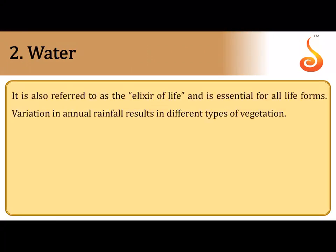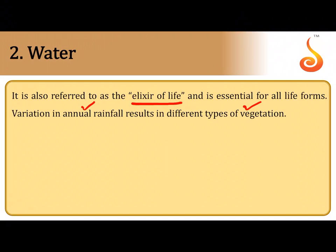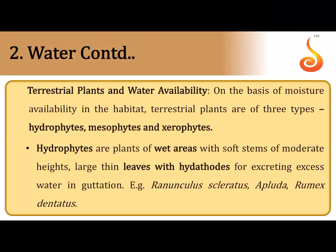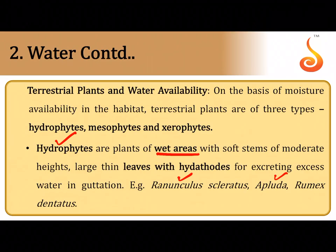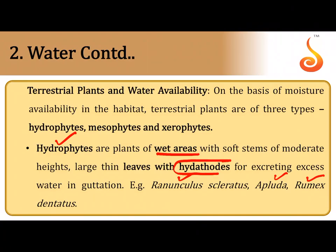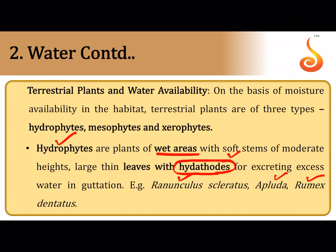Water is called the elixir of life — life on our planet is possible because Earth is in a habitable zone in the solar system where water occurs in its liquid form. Water comes down to Earth as annual rainfall, resulting in different types of plant distribution, which directly impacts animal distribution. Terrestrial plants in wet areas requiring a lot of moisture are referred to as hydrophytes, for example Ranunculus. They have special water stomata on the margins of their leaves called hydathodes, which release excess water as droplets — a process called guttation.